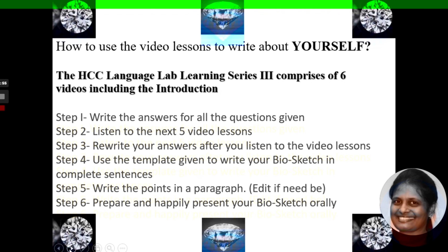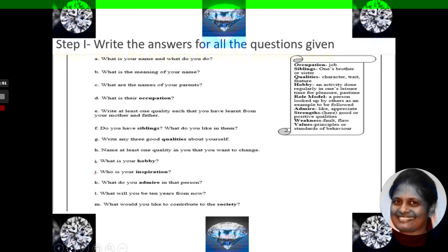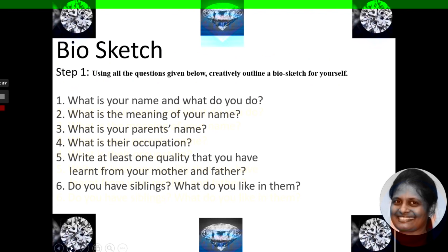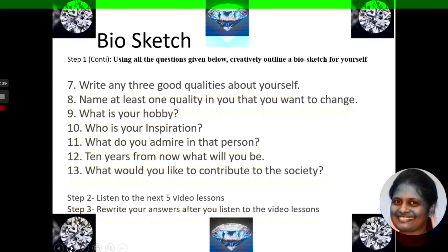Let me take you through the process in detail. In Step 1, you have to write the answers for all the questions given here. The same set of questions are available in the description for your download. These are the questions: What is your name and what do you do? What is the meaning of your name? What is your parents' name? What is their occupation? Write at least one quality that you have learnt from your mother and father. Do you have siblings? What do you like in them?